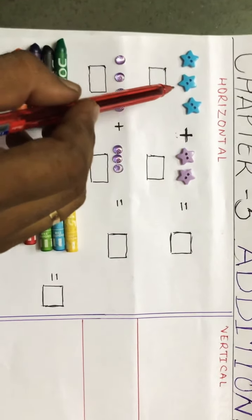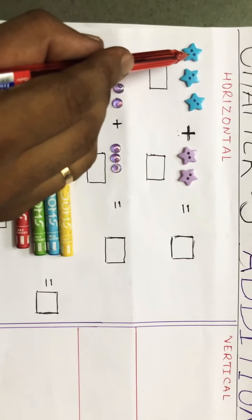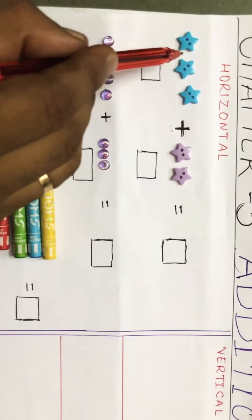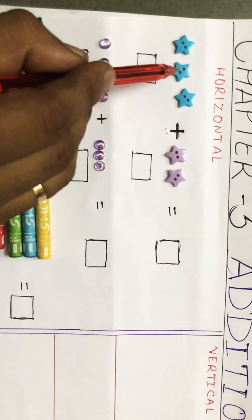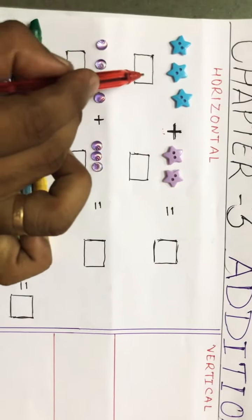Now see here, blue and purple stars are there. Here how many stars are there? Count with me: one, two, and three. How many stars are there? Three.